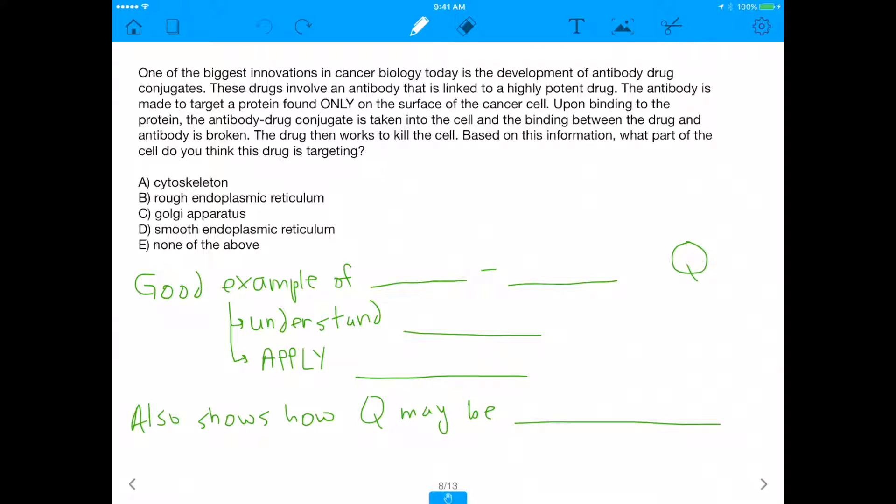It is very much relevant to science. With that, let's get started. It says one of the biggest innovations in cancer biology today is the development of antibody drug conjugates. These drugs involve an antibody that is linked to a highly potent drug. The antibody is made to target a protein found only on the surface of the cancer cell. Upon binding to the protein, the antibody drug conjugate is taken into the cell and the binding between the drug and the antibody is broken. The drug then works to kill the cell. Based on this information, what part of the cell do you think the drug is targeting?